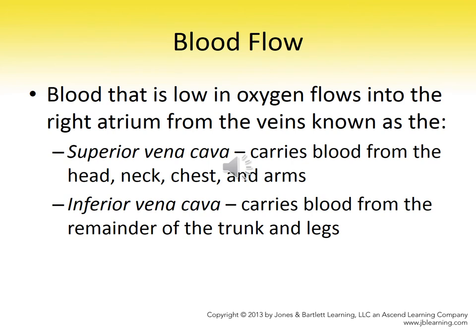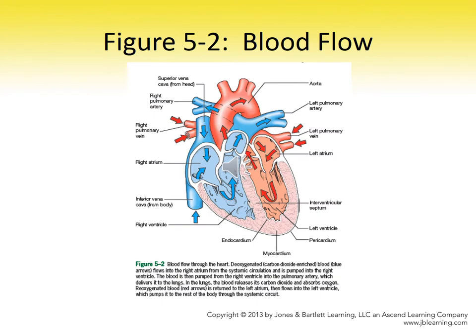Blood always flows from right to left. It starts from our largest vein, the vena cava, which attaches to the right atrium in two places — superior on top and inferior on the bottom. Everything from the head and neck drains down through the superior vena cava into the right atrium, and everything from the rest of the body comes back up through the inferior vena cava into the right atrium. Follow the blue arrows — note that blood is actually blue until it hits oxygen, which is why our veins appear bluish-purple.